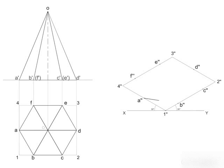Joining A double dash, B double dash, C double dash, D double dash, E double dash, F double dash, A double dash will form the isometric view of the hexagonal base surface of the pyramid.